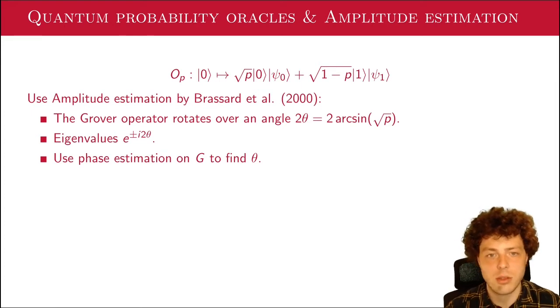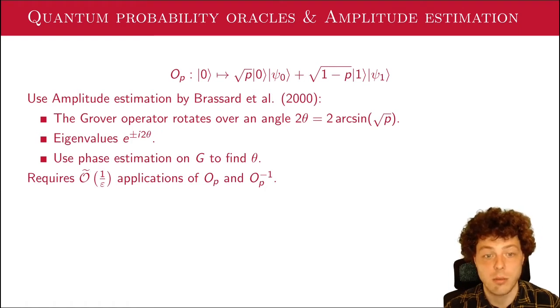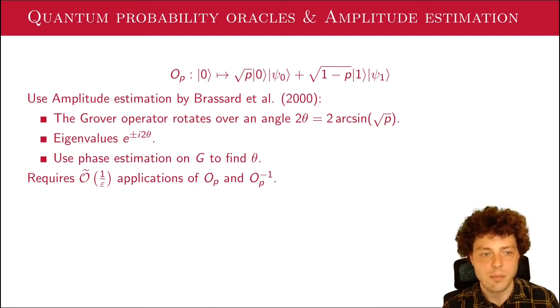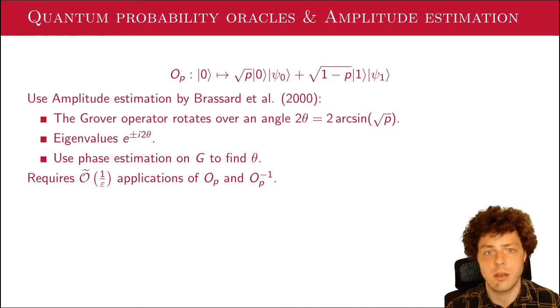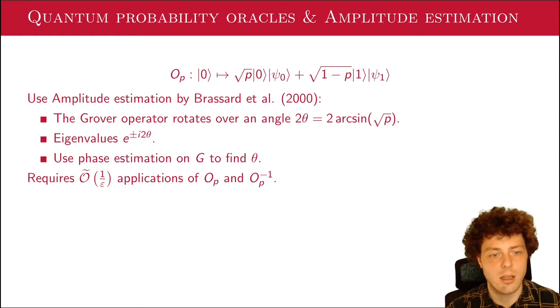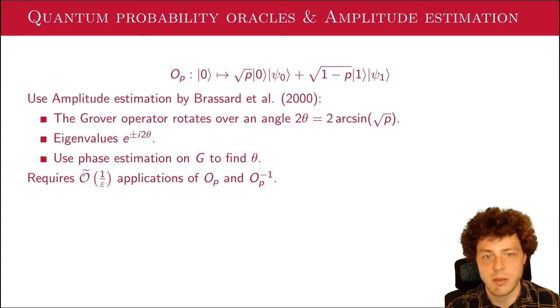And we know that this is in the subspace. These are all the eigenvalues. So if we do phase estimation on a random vector in this subspace and on G, then we'll find 2 theta or minus 2 theta. So we can find theta and therefore find P. And if you do the calculation on the approximation errors, you will find that you need about 1 over epsilon applications of O_P and O_P inverse. So quadratically less than in the classical case. And this comes from the fact that we're doing something different than just applying O_P and measuring to get a sample from the distribution. We're really using the fact that we have an operational way to go back and forth here. And note that I have a tilde above the O, and we'll do that a lot for the talk for the exact complexity. So direct you to the paper, but I'll try and suppress log factors to keep the math as clean as possible.